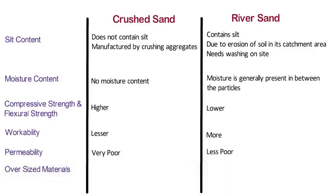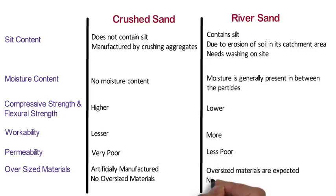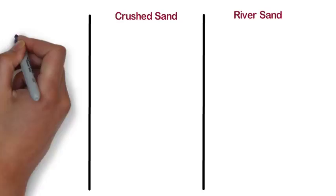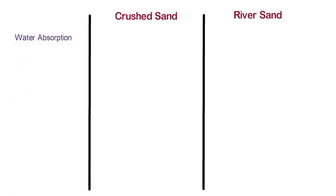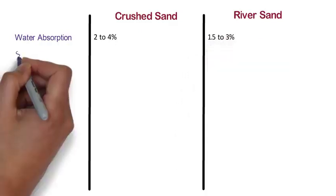Oversized Materials: Crushed sand is artificially manufactured, so there are no oversized materials, whereas oversized materials are expected in natural sand and hence it needs screening on site. Water Absorption: The water absorption of crushed sand is 2–4%, whereas water absorption of river sand is 1.5–3%.